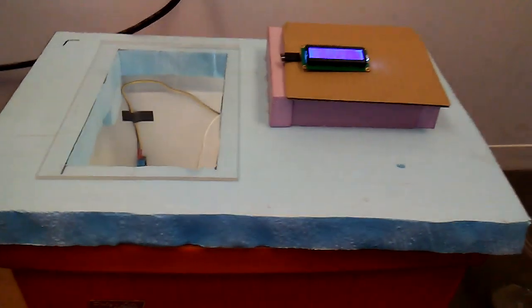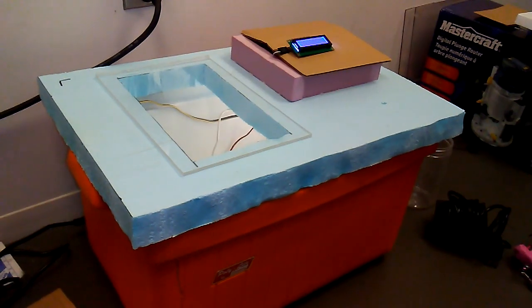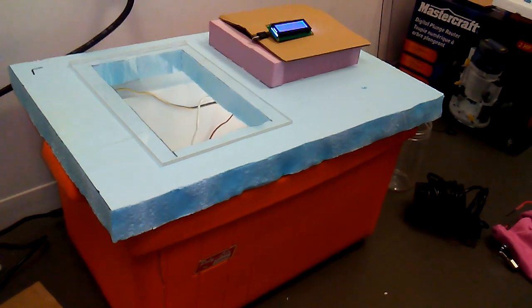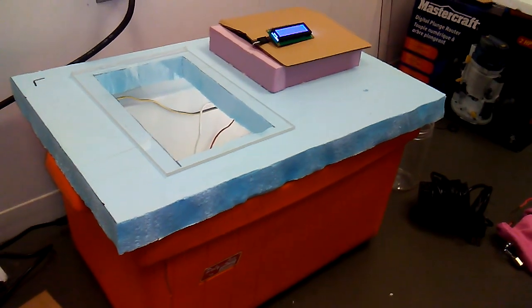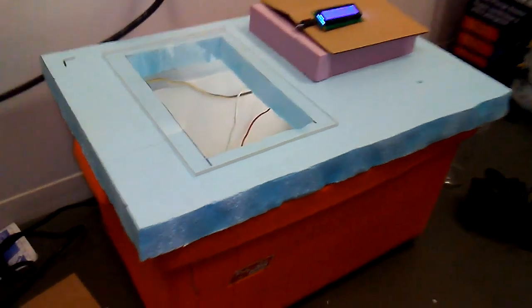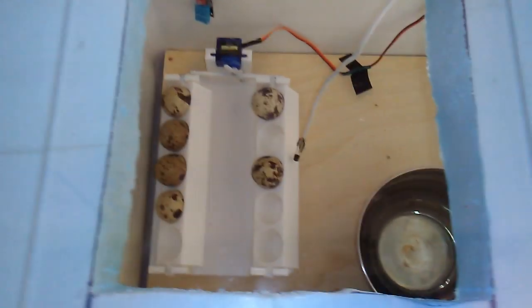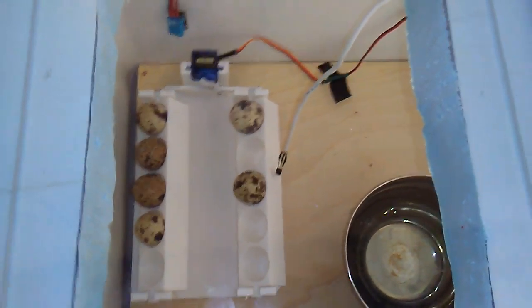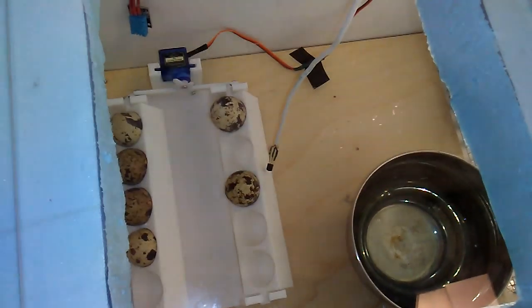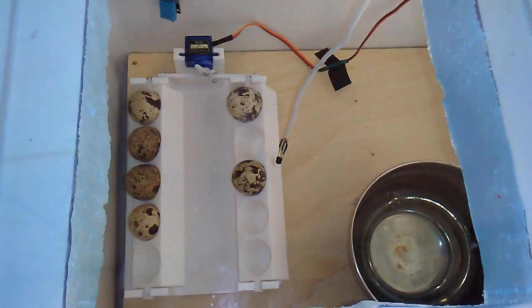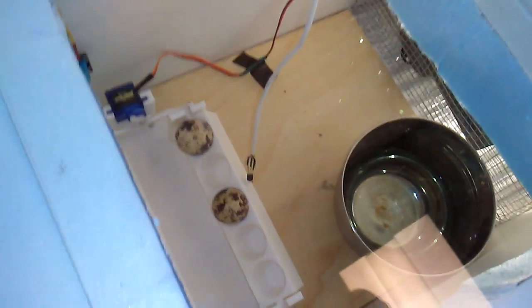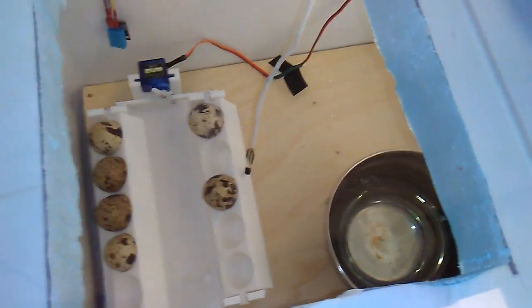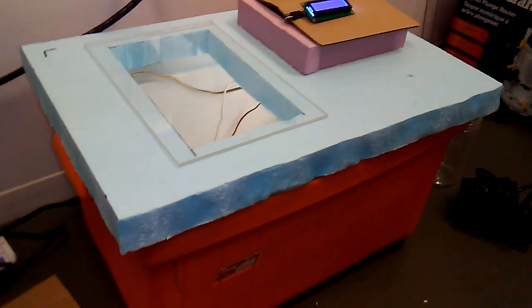So next step would be to get some nice fresh fertilized eggs. This can hold ten at a time. You can put more obviously if you make another one of these, or if you don't want to skip the moving mechanism, you can just lay them all on the bottom and then move with your hands, at which point you can probably put over 50 eggs in there.